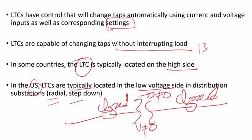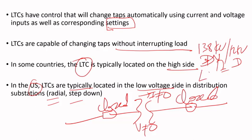For example, with a 138 kV to 12 kV transformer, where one side is delta and the other is grounded Y, it makes sense to put the LTC on the Y side. You can place the tap changer at the neutral point, which requires less insulation and clearance. If you put it on the delta side at 34 or 69 kV, it requires a lot of insulation clearance — phase to phase, phase to ground, tap to tap — making the tap changer physically huge.